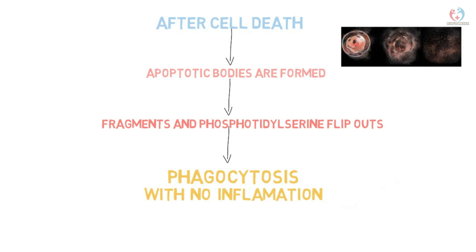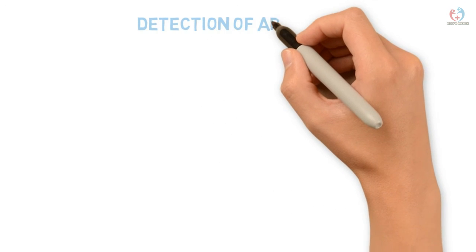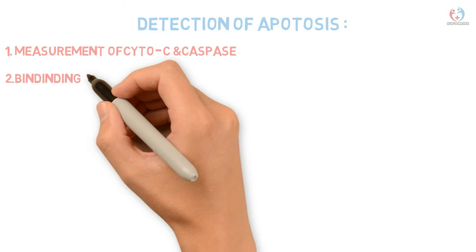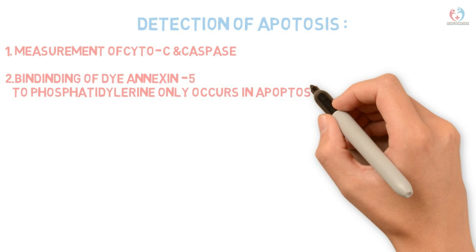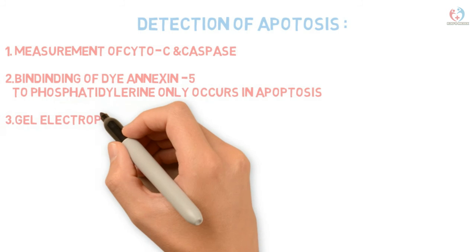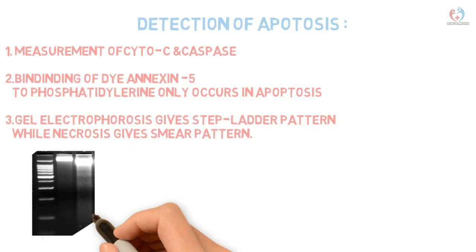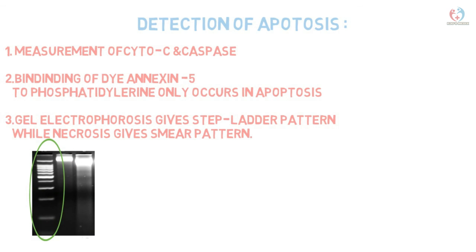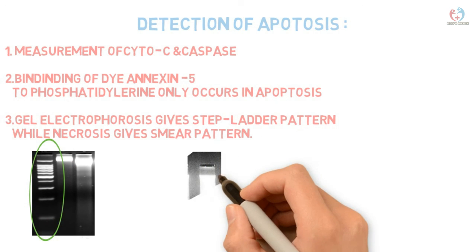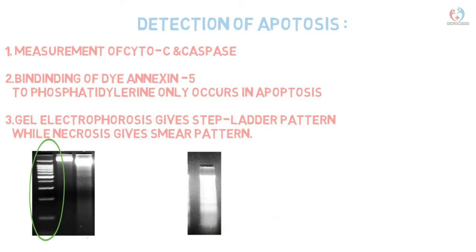Phagocytosis of apoptotic bodies occurs without inflammation. Detection of apoptosis involves measurement of cytochrome c and caspase enzyme activity; phosphatidylserine residues on the outer membrane react positively with Annexin V dye. On gel electrophoresis, apoptosis produces a characteristic step-ladder pattern, while necrosis produces a smear pattern on agarose gel electrophoresis.